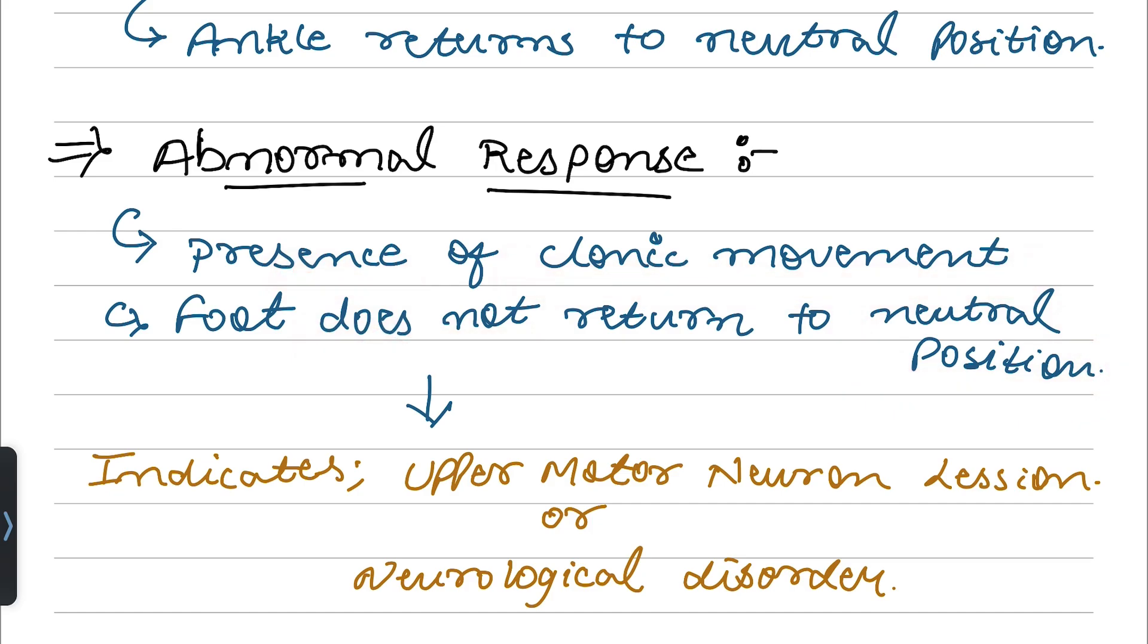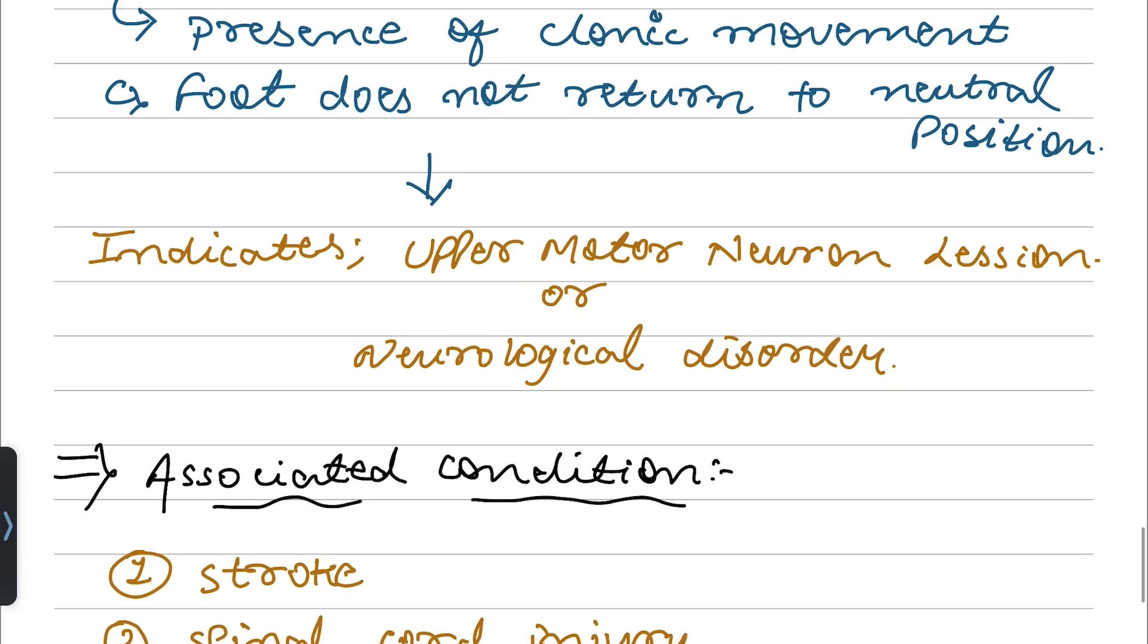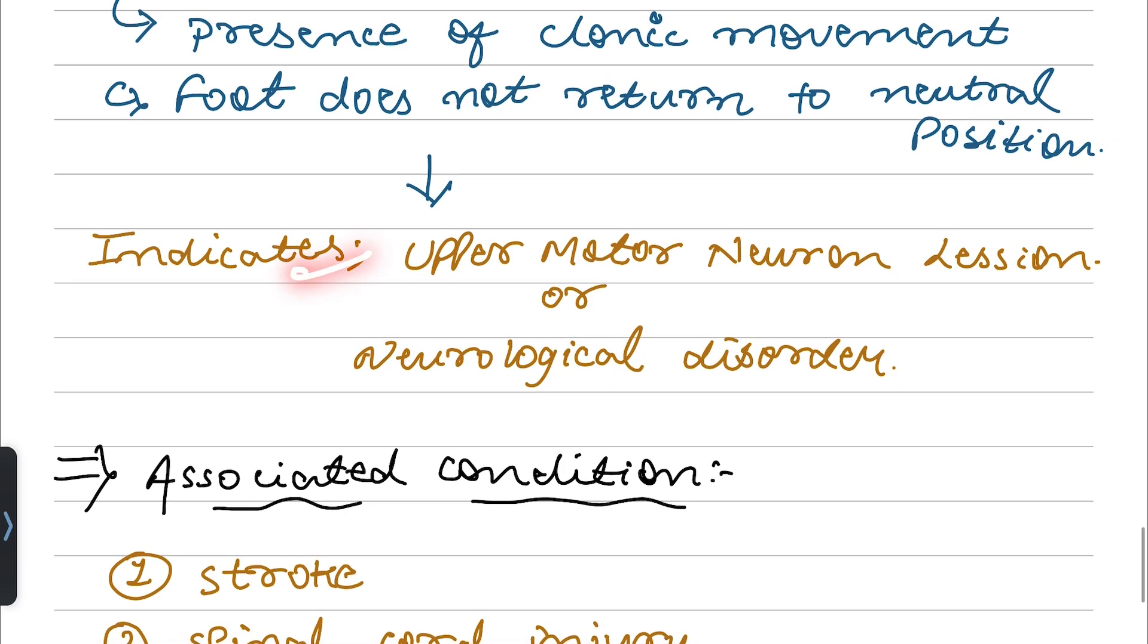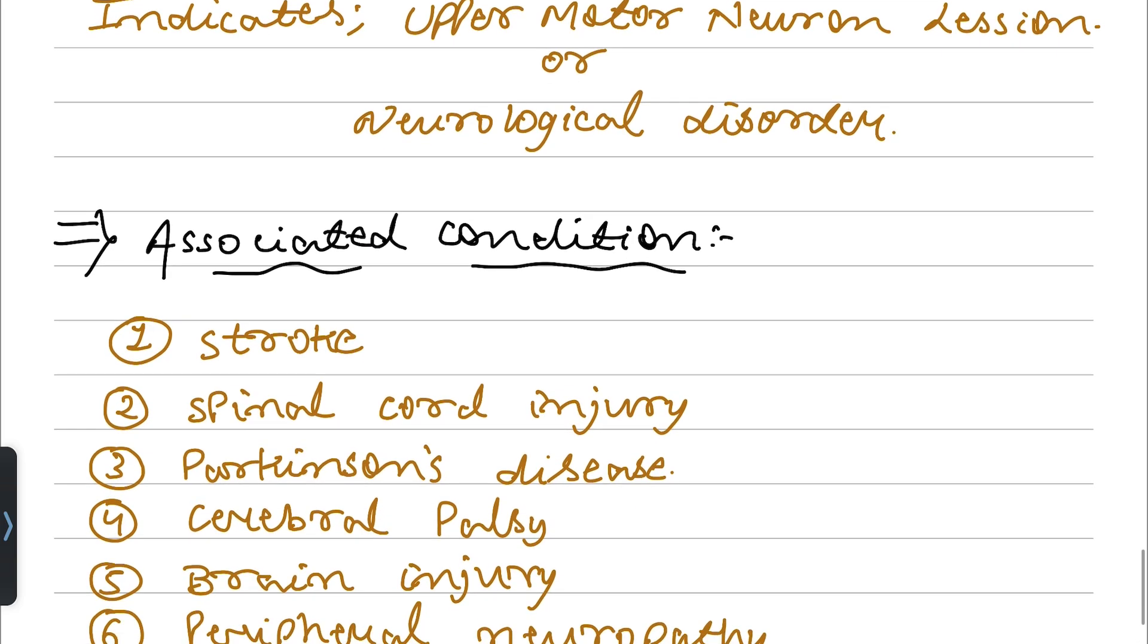This condition is present, what indicates? That indicates upper motor neuron lesion or neurological disorder. What indicates that the ankle clonus reflex is positive. What indicates? The stroke.